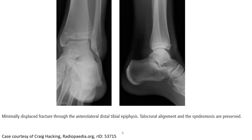This is a good example of a Tillaux fracture. We can see a minimally displaced fracture through the anterior lateral distal tibia epiphysis. The lateral crural alignment and the syndesmosis are preserved. A lucent fracture line goes from the medial aspect of the epiphysis across the epiphysis of the distal tibia.